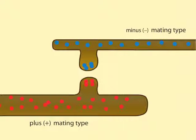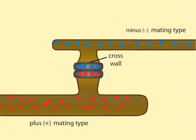As the side branches grow, nuclei stream in. A cross wall forms near the end of each branch, isolating several haploid nuclei at the ends. The nuclei are now isolated in sexual structures called gametangia.